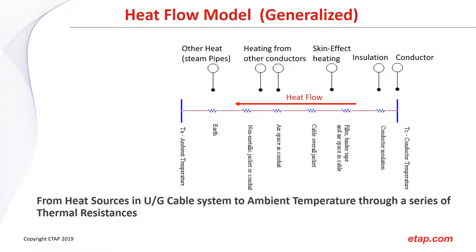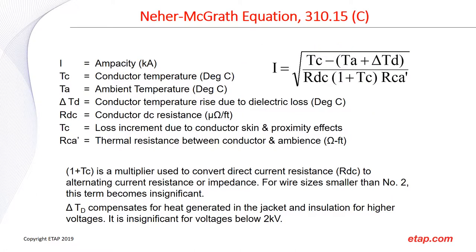The heat flow arrow goes from the conductor temperature, through conductor insulation, through filler, tape, air space in the cable, the cable overall jacket, air space in the conduit, the non-metallic conduit such as PVC, into the earth, and finally into the ambient temperature. All of these barriers need to be taken into account when doing thermal analysis. Both the NEC and IEC standards tell us to use a thermal calculation such as the Neher-McGrath method or the IEC standard.